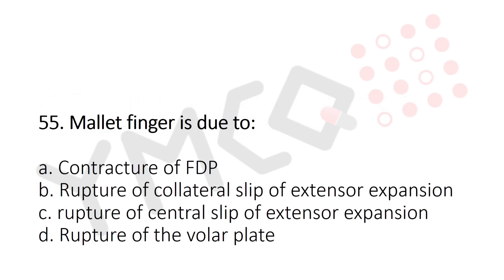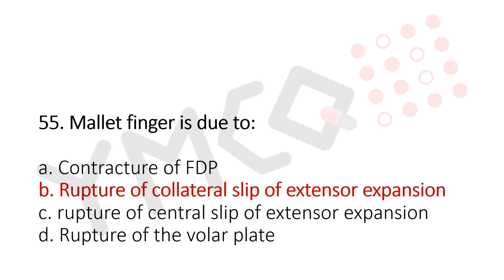Question 55: Mallet finger is due to — Option A: contracture of FDP, Option B: rupture of collateral slip of extensor expansion, Option C: rupture of central slip of extensor expansion, Option D: rupture of volar plate. The answer is Option B, rupture of collateral slip of extensor expansion.